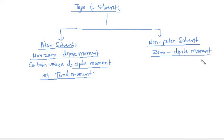First we'll talk about dipole moment. So dipole moment is a quantity which decides the polarity of the molecule. If the dipole moment is zero, the molecule is non-polar, the solvent is non-polar.